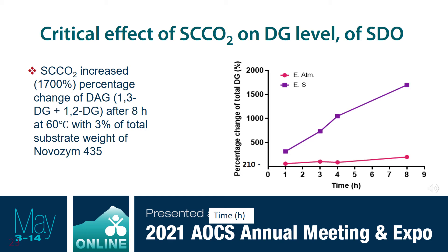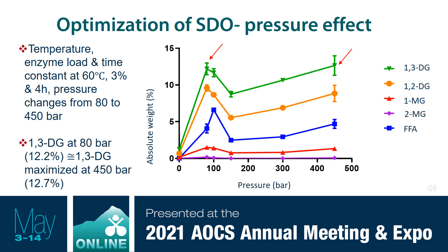Now I want to look at how I can vary the reaction conditions to optimize them. In order to optimize the soybean oil-based DAG structural lipids, let's focus on pressure. Here is my yield on the Y-axis and pressure on the X-axis. I'm focusing on 1,3-DG, but you can also see the general trend for other components such as 1,2-DG, MAGs, and free fatty acids — they all follow the same pattern as 1,3-DG with pressure. I get a better yield at 450 bar, but because it's only slightly larger than the yield at 80 bar, I would advocate operating at 80 bar, because then you don't have to use a high-pressure pump.